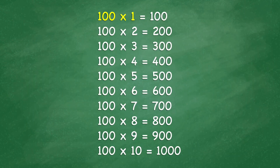100 times 1 equals 100. 100 times 2 equals 200. 100 times 3 equals 300. 100 times 4 equals 400.